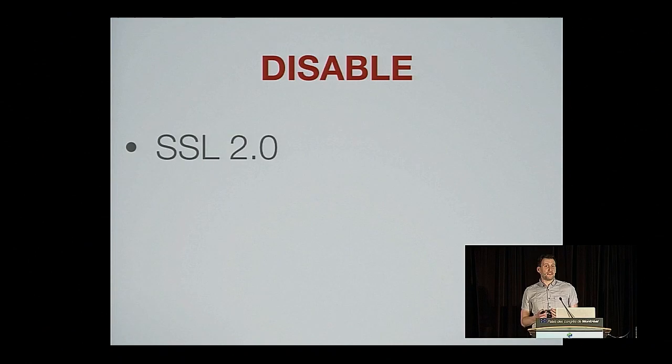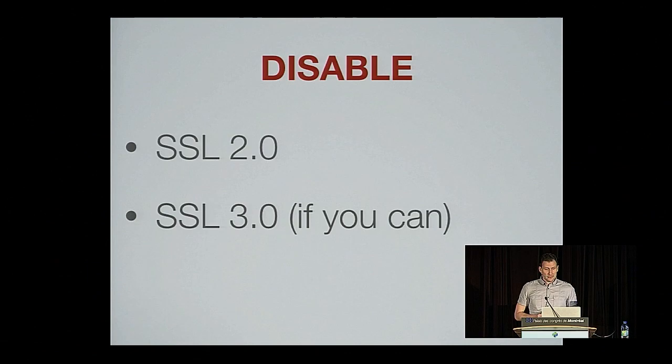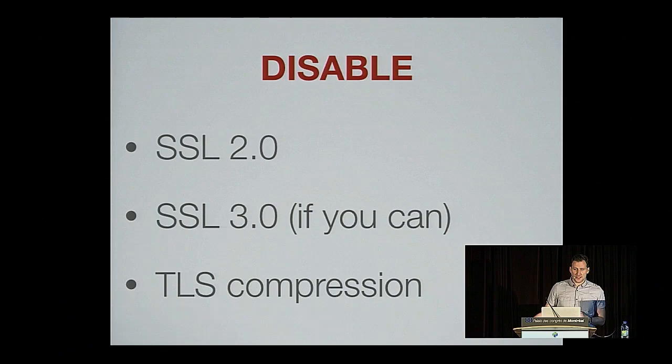Next, disable SSL 2 — chances are it's not necessary, but for instance Apple's OpenSSL still needs that. Not that I'm suggesting you should deploy servers on OS X, because you absolutely shouldn't. If you don't have to support some ancient operating system like Windows XP, disable SSL 3 as well. And finally, disable TLS compression to avoid CRIME attacks. That's about it.